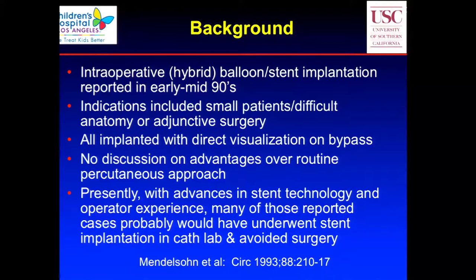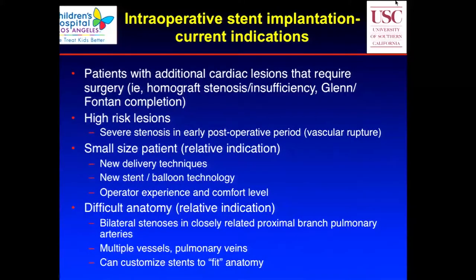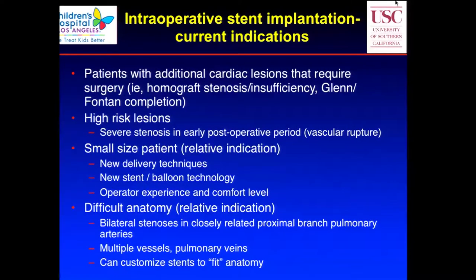Even though many cases no longer meet indications to go to the operating room and can be done in the cath lab, there are still some situations where there's an advantage. Patients who must have surgery for additional procedures — such as a homograft change-out, Glenn, or Fontan — might benefit from using that open chest opportunity to place a stent. Certainly, when there's a high-risk lesion such as early post-operative stenosis, where you worry about rupture, doing it in the operating room adds a lot of safety. In small patients, this is a relative indication depending on operator experience.